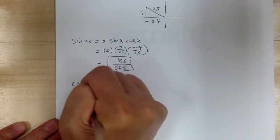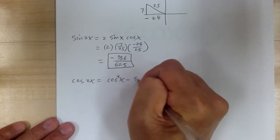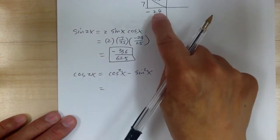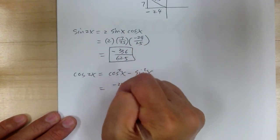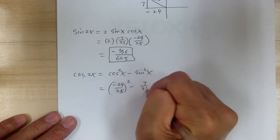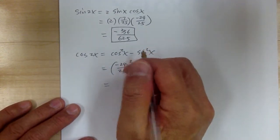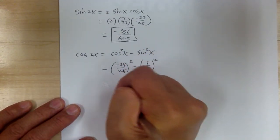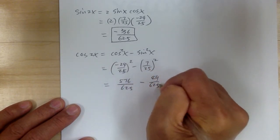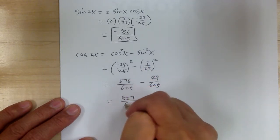Then you do cosine of 2x. This is equal to cosine squared x minus sine squared x. Cosine is negative 24 over 25 squared, minus sine which is 7 over 25 squared. You get 576 over 625 minus 49 over 625, which equals 527 over 625.